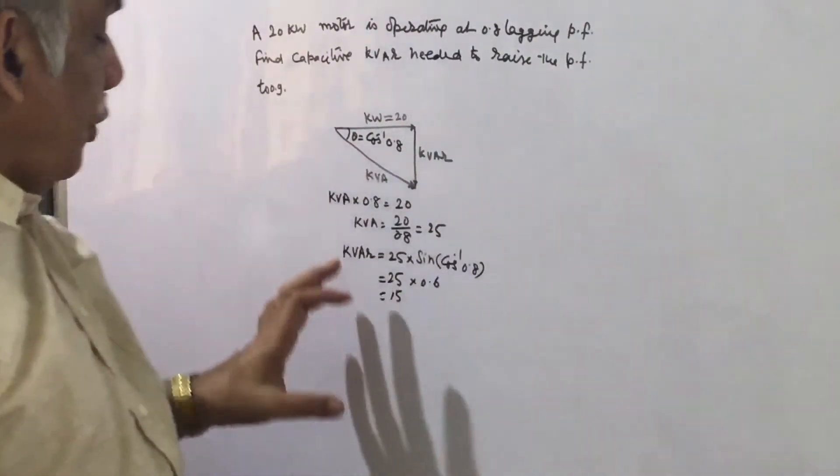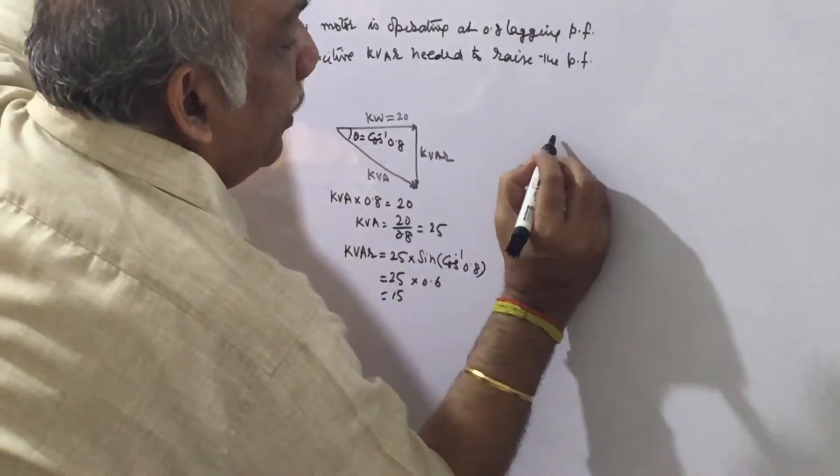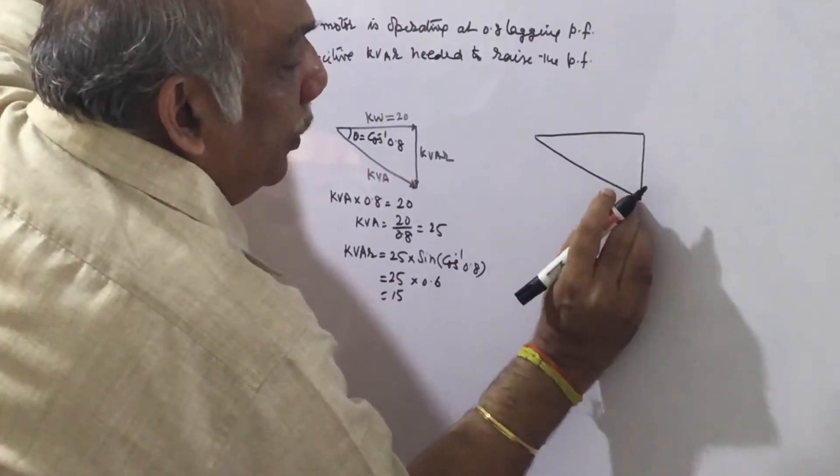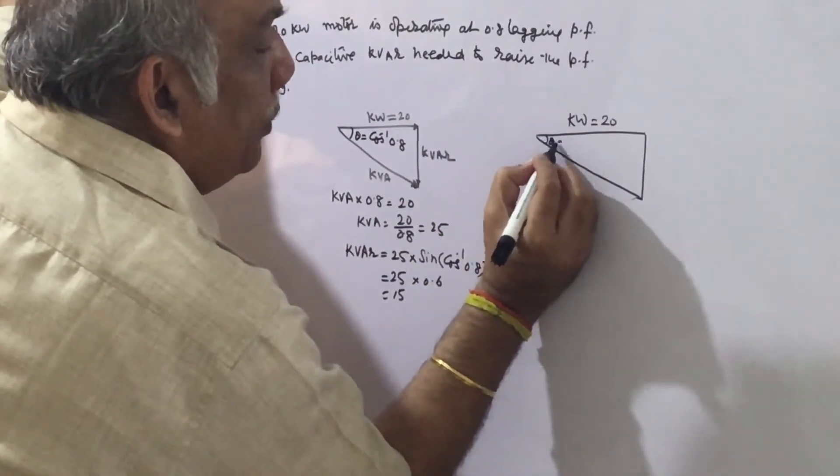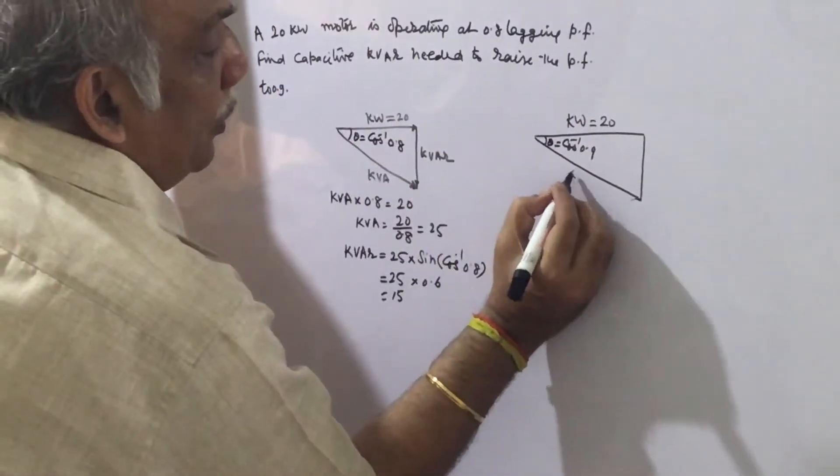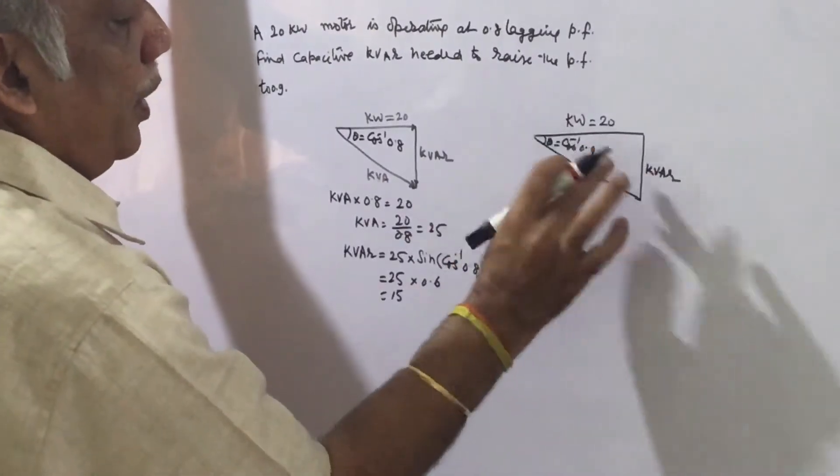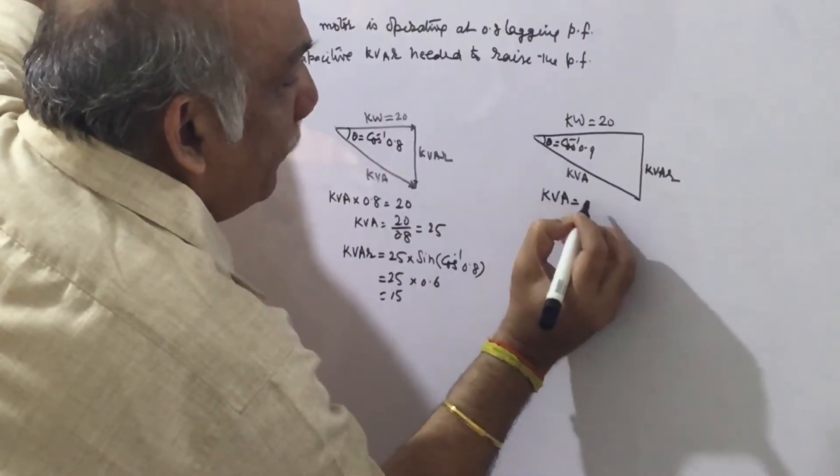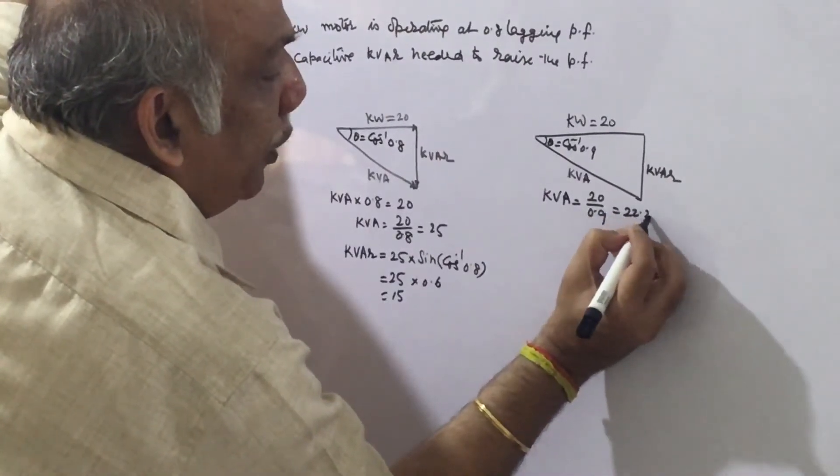Now when this power factor raises to 0.9, we can draw this vector diagram again. The kVA will now be 20 divided by 0.9, that is 22.22.